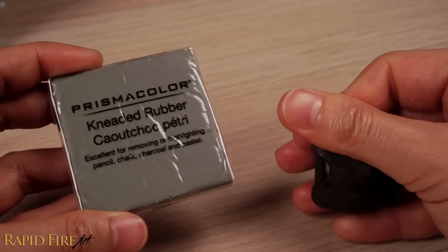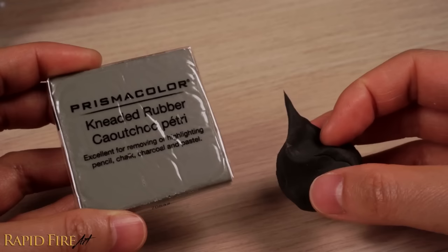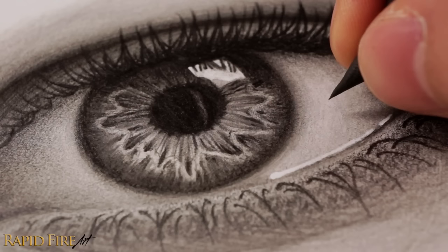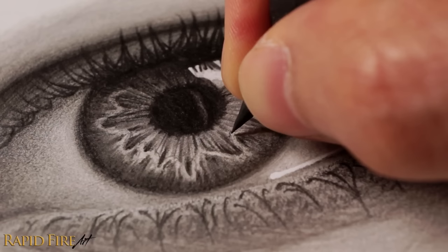And then for erasing fine details, I highly recommend adding a kneaded eraser to your toolbox. You can mold it into any shape to erase even the tiniest detail in your drawing. No rubbing required, just press and lift. You don't have to deal with wiping away crumbs or erasing more than you actually need.